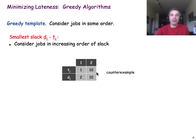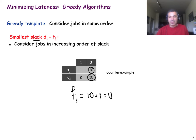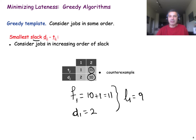Here is another idea: find the slack time of each job, which is the difference between the deadline and how long the job takes. This seems intuitive — you want to first do the jobs that have a small slack time. But in a counter-example, scheduling the job with smallest slack first causes job one to have a lateness of nine, whereas doing job one first results in a much lower lateness of only one. So clearly this heuristic is not optimal either.